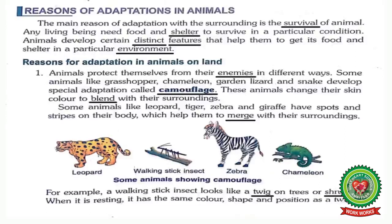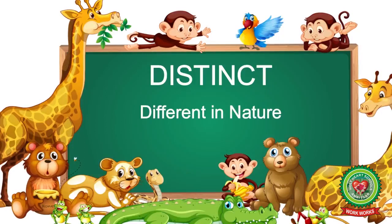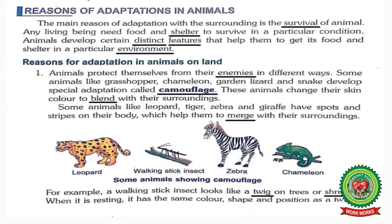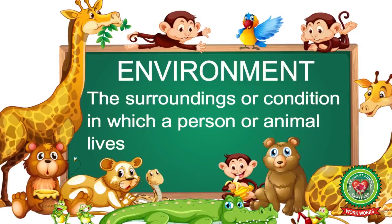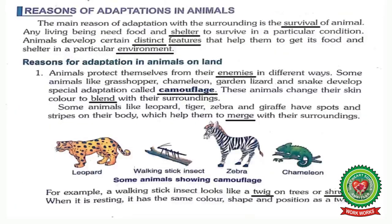So students, what are the requirements of a living organism living in a particular condition? They are food and shelter, without which they cannot live in that area. Animals develop certain distinct features that help them to get food and shelter in a particular environment. Underline the word 'distinct' — meaning different in nature. Underline 'features' — meaning aspect of something. Underline 'environment' — meaning the surrounding or condition in which a person or animal lives.